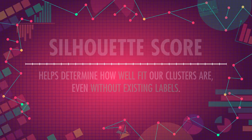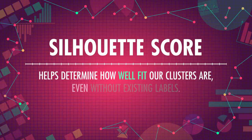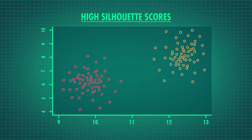Unlike the supervised machine learning we looked at last time, you can't calculate the accuracy of your results because there are no true groups or labels to compare. However, we're not totally lost. There's one method called the silhouette score that can help us determine how well fit our clusters are, even without existing labels. Roughly speaking, the silhouette score measures cluster cohesion and separation — which is just a fancy way of saying that the data points in a cluster are close to each other but far away from points in other clusters. Here's an example of clusters that have high silhouette scores.